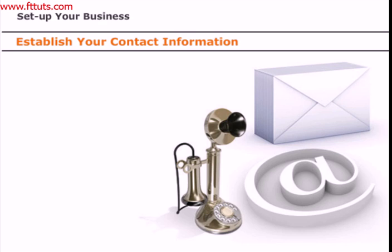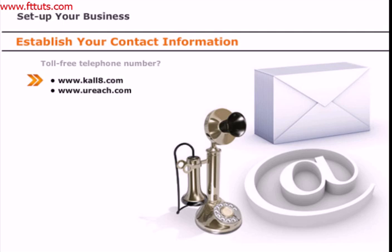Once you have registered your business, start setting up specific contact features. One of the first things to decide is how people are going to contact you. If your target market is outside your calling area, consider getting a toll-free number. If your target market is within your calling area, ask yourself if you want people calling your home phone — it sounds more professional to have someone answer by announcing the business name. For toll-free and business telephone services, check out call8.com.